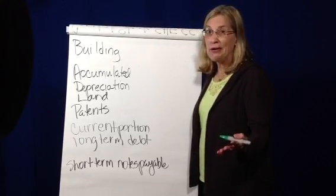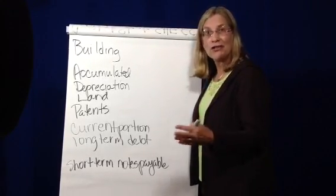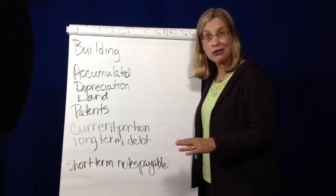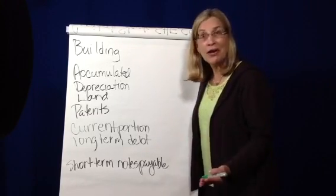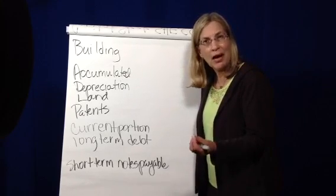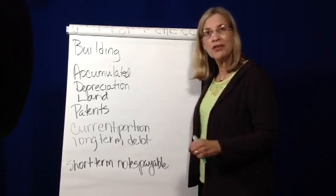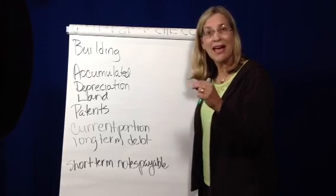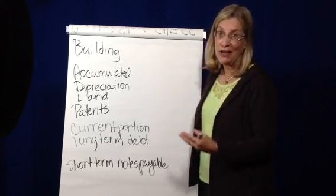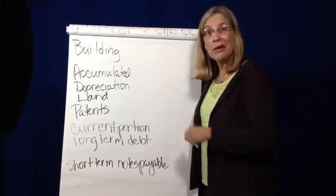Hey, we're talking about different accounts that you'd find on your financial statements and talking about what their definition is, also what financial statement they'd show up on and the type of account it is, and if we were doing a statement of cash flows, what activity type it is, whether it's operating, investing, or financing. So we're looking at building.